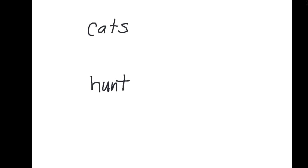When you have a broad topic area, you want to break it apart into its component concepts. Here we have 'cats' and 'hunt.' The next step to building a search is to think about related concepts or synonyms — other words that might be used in place of each of these. An author writing an article or book might write about cats, but they may also write about felines. There's also the scientific term — I believe it's 'Felis catus' — the Latin scientific term for a domesticated house cat.